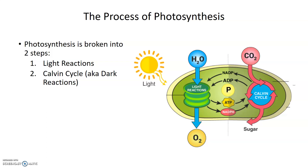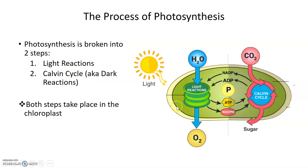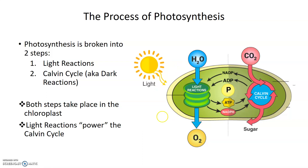We're going to break photosynthesis down into two separate reactions. Photosynthesis can be broken down into two parts: the light reactions and the dark reactions, or the Calvin cycle. Both of these steps take place in the chloroplast. The light reactions provide the power or energy for the Calvin cycle or dark reactions to take place.